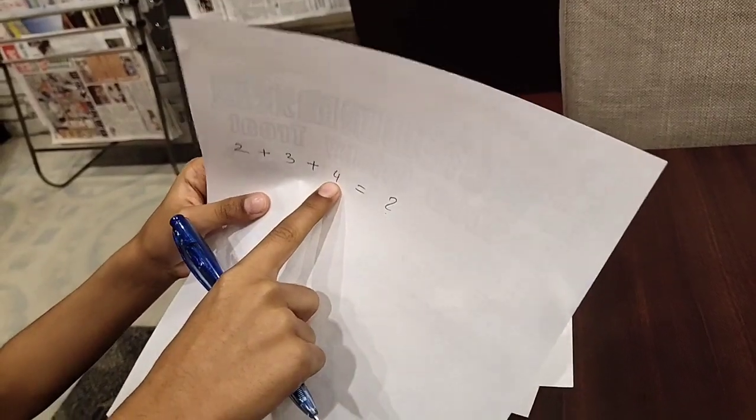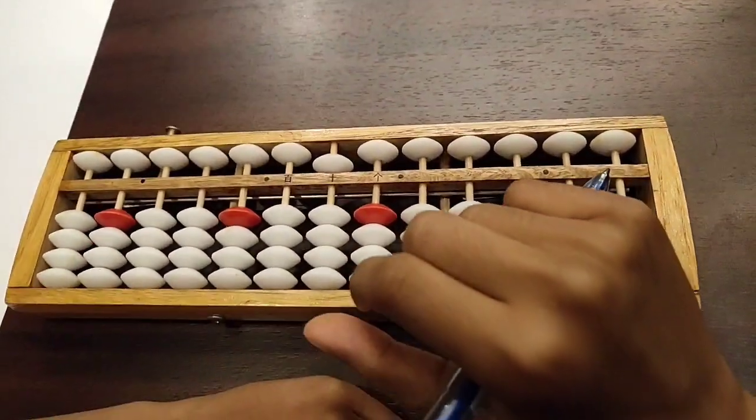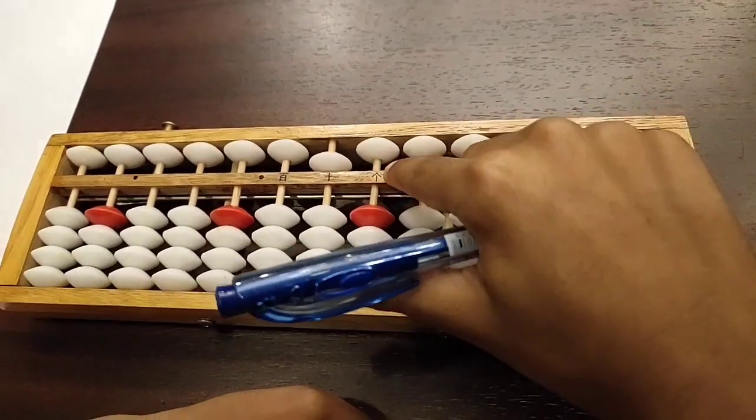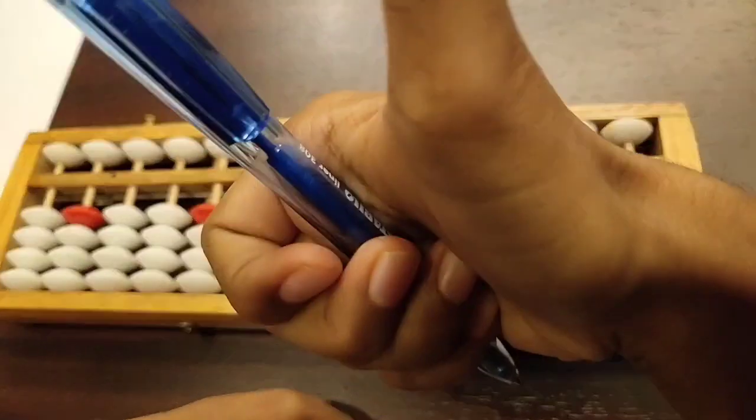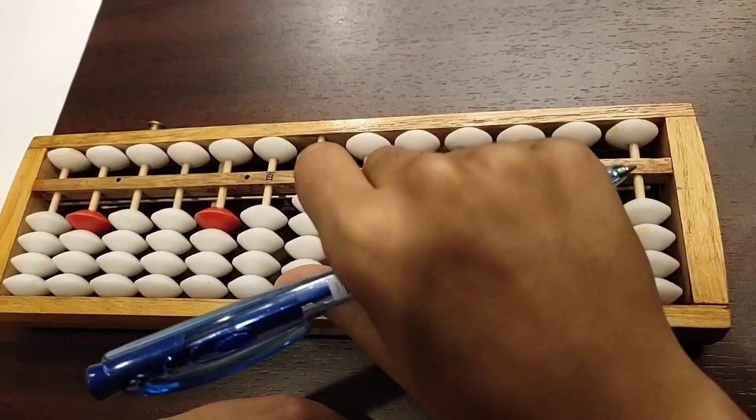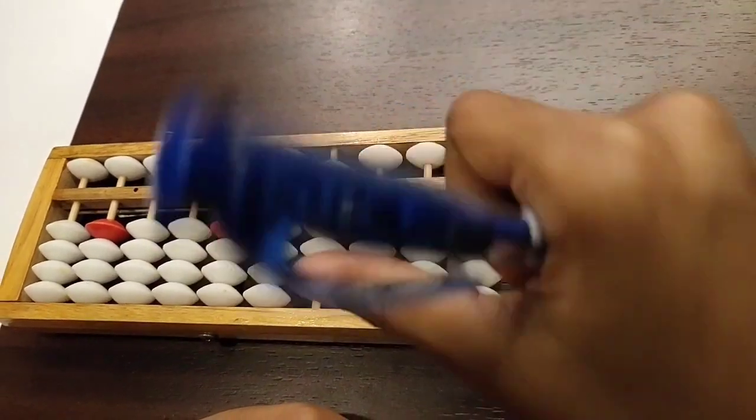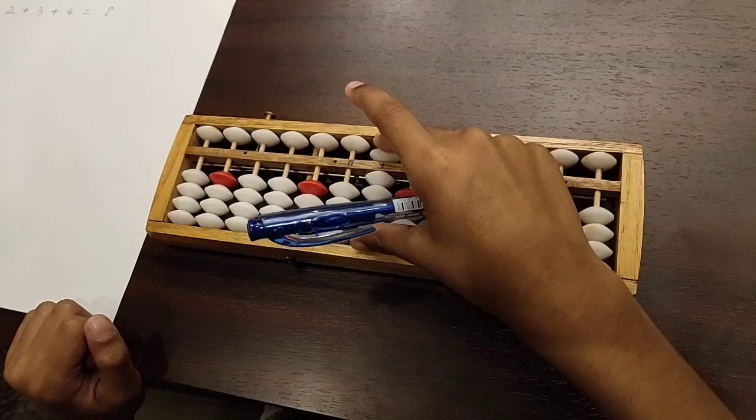So now we have to add the last number which is 4. Do we have 4 beads to move up which are below the rod? If you said yes, it would be correct. There are exactly 4 beads. So we move all 4 beads up with your thumb finger. So now we got the answer which is 9.